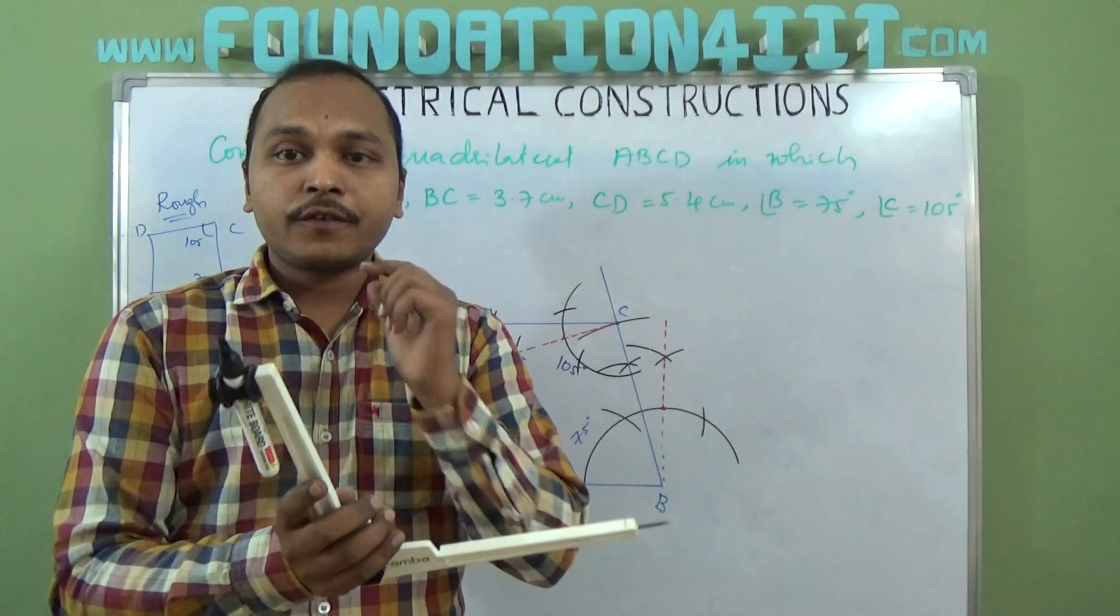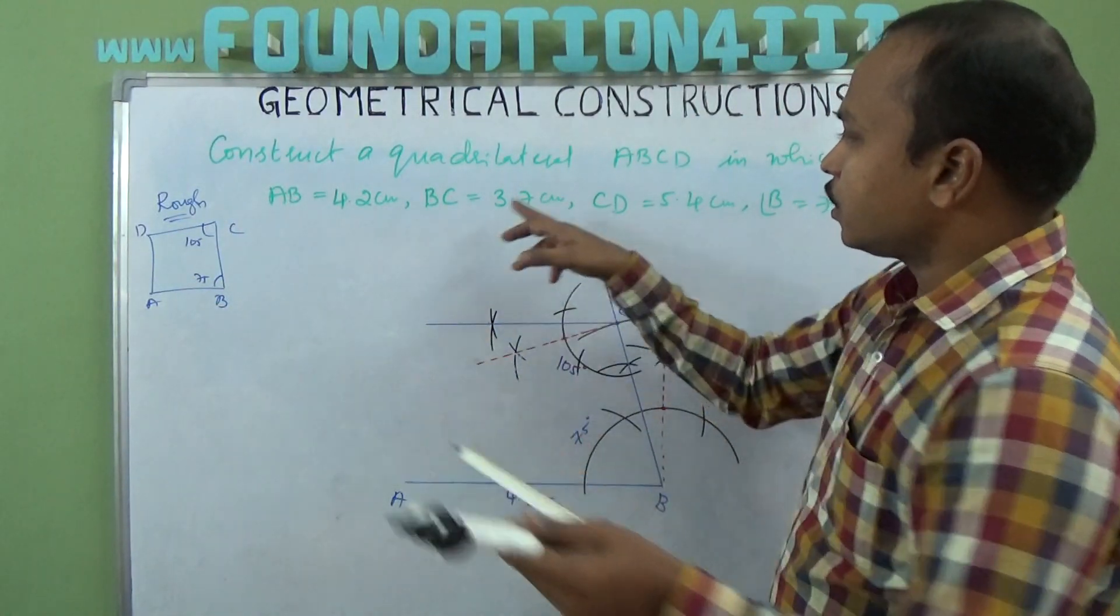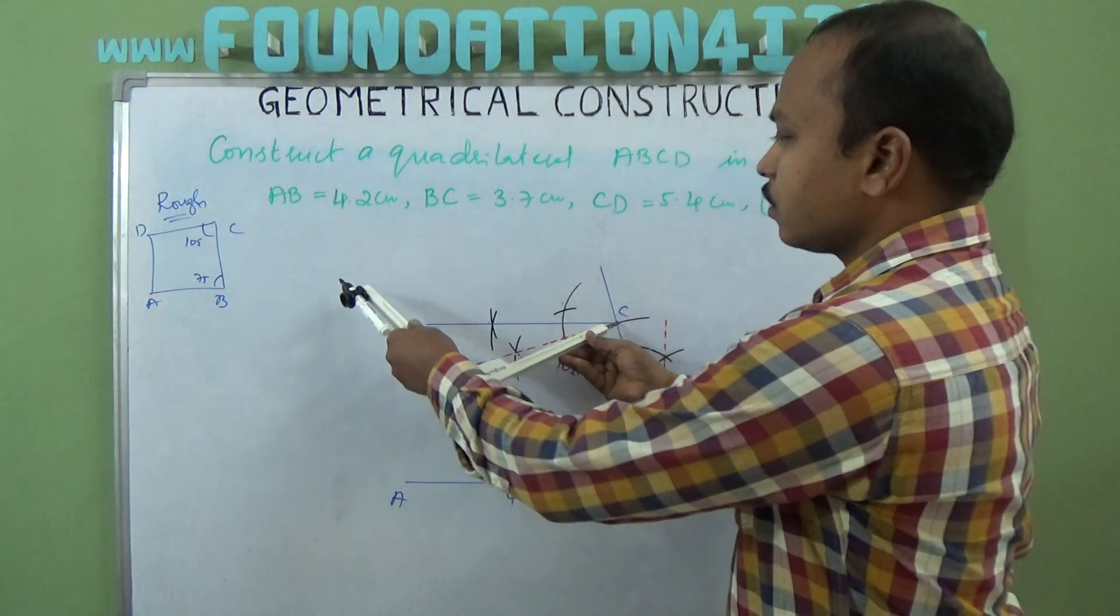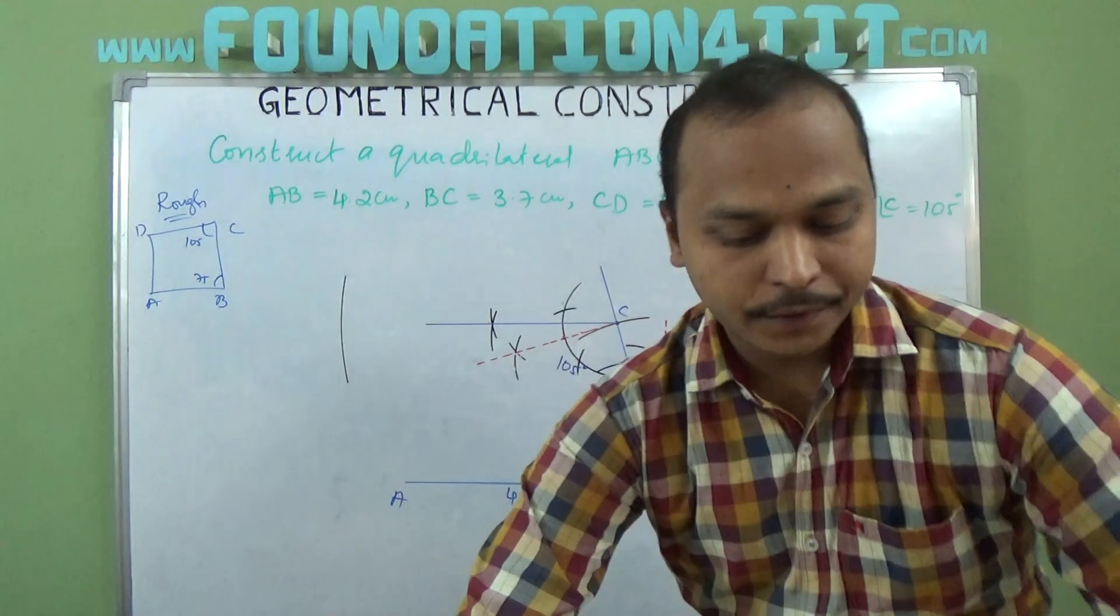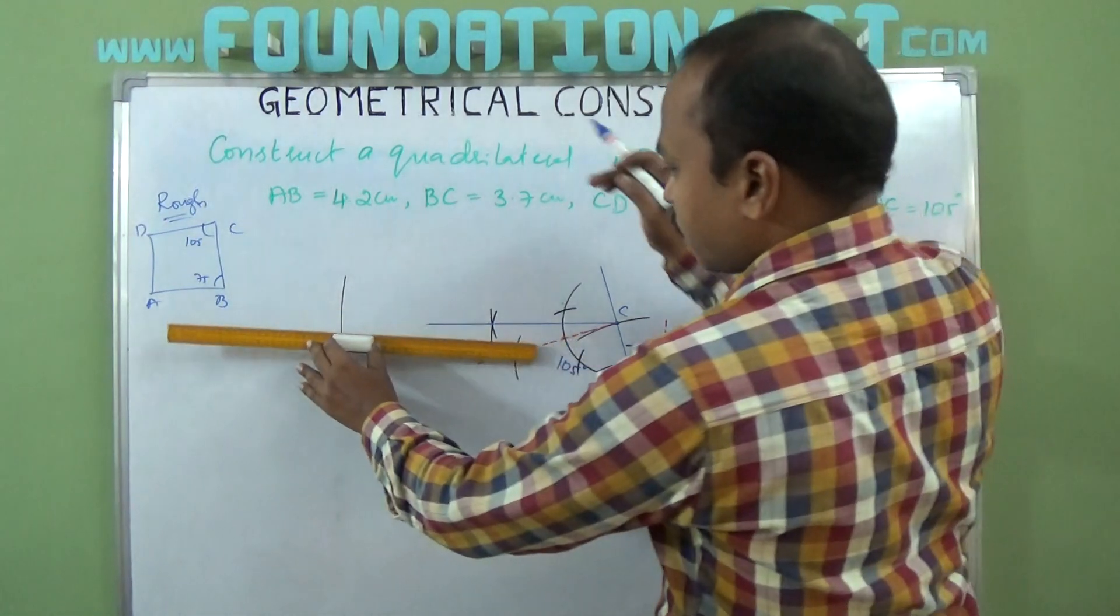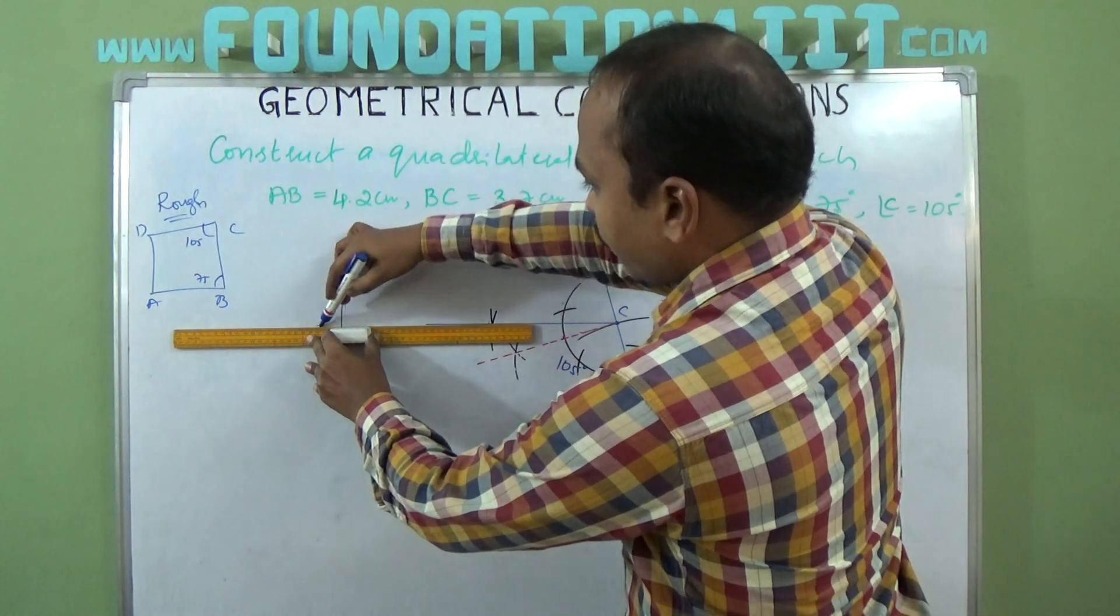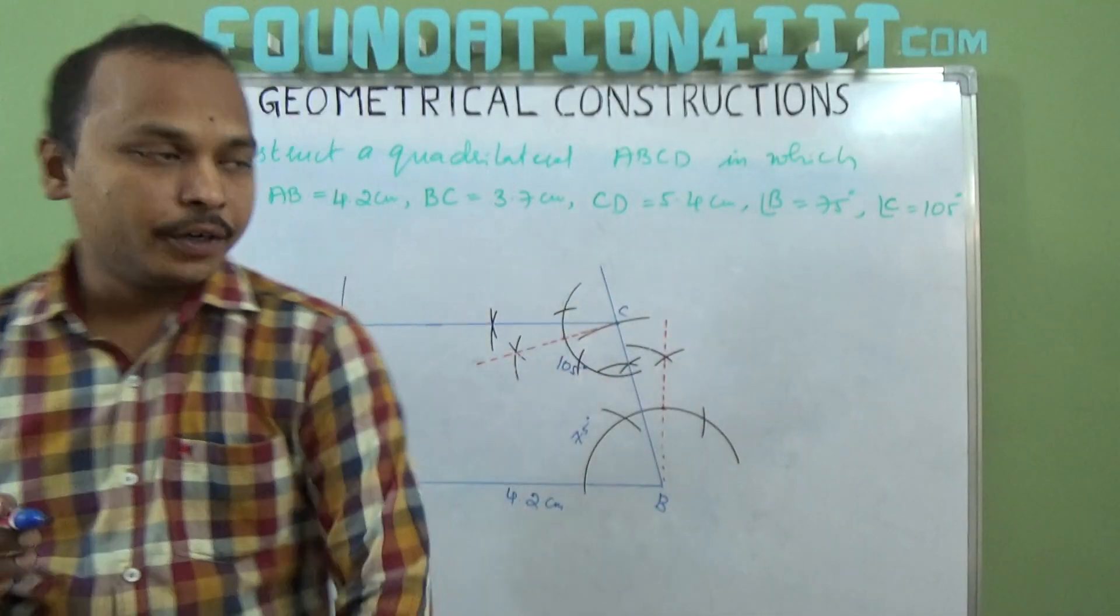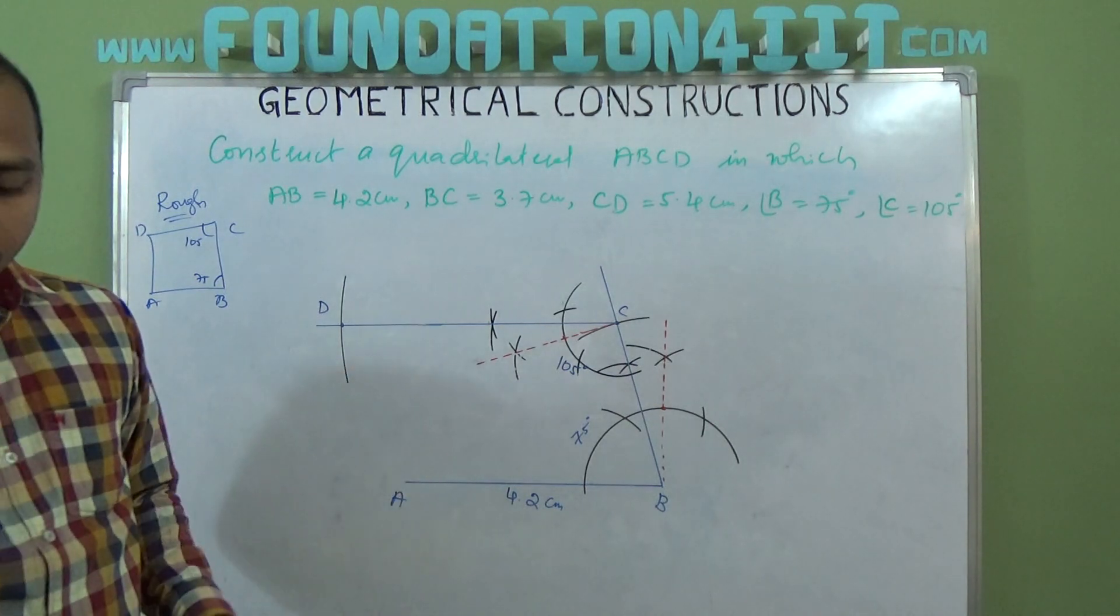Now C to D, take 5.4 centimeters. Take 5.4 centimeters and cut from C. Because C to D is 5.4 centimeters, from the C you should draw an arc with 5.4 centimeters. If it's not connecting you can extend this line.